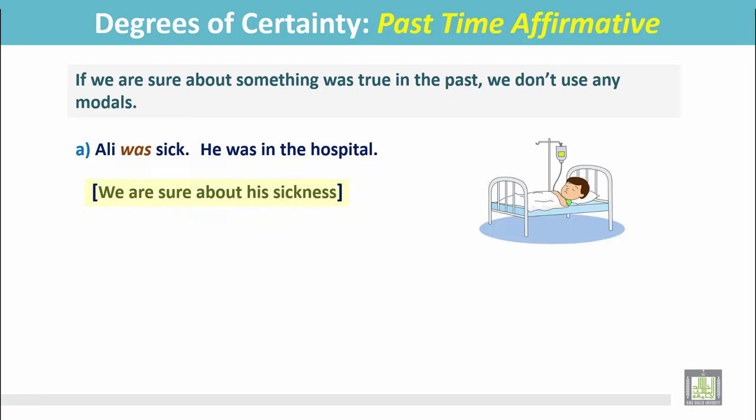We are sure about his sickness, that he was in the hospital. And in this situation, degrees of certainty is 100% because we knew that he was in the hospital.